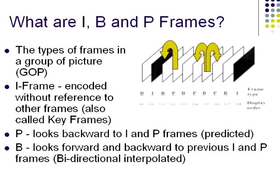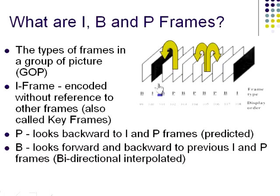After profiles and levels, the next choice you'll face in a typical encoder is the number of B-frames and reference frames. Let's define I, P, and B frames — the types of frames that make up a group of pictures, or GOP. I-frames, also called key frames, are produced without reference to any other frame, typically using a technology like JPEG, just like your digital camera. P-frames can use intra-frame redundancies from previous frames for more efficient encoding, while B-frames can find these redundancies in both directions.